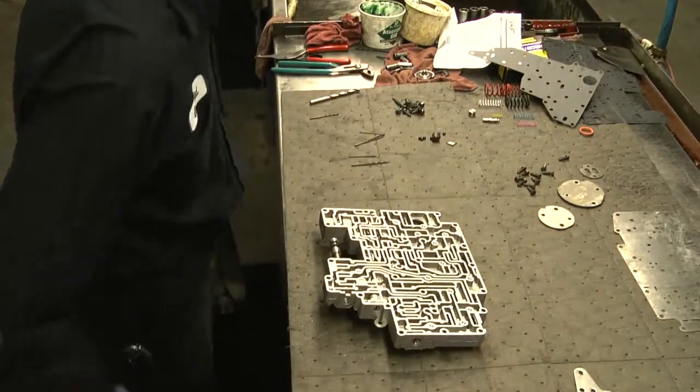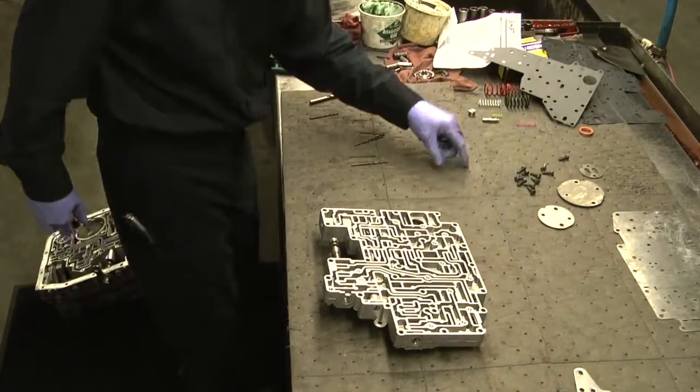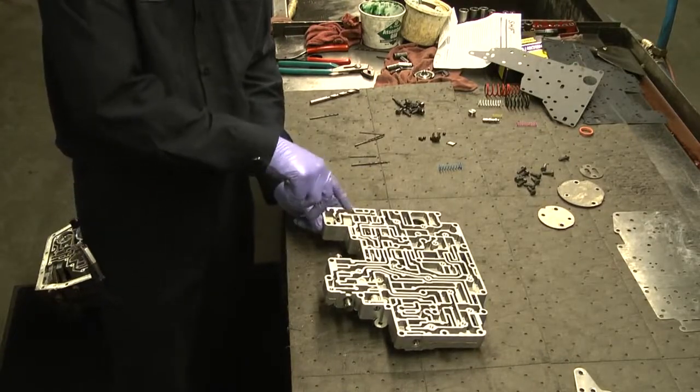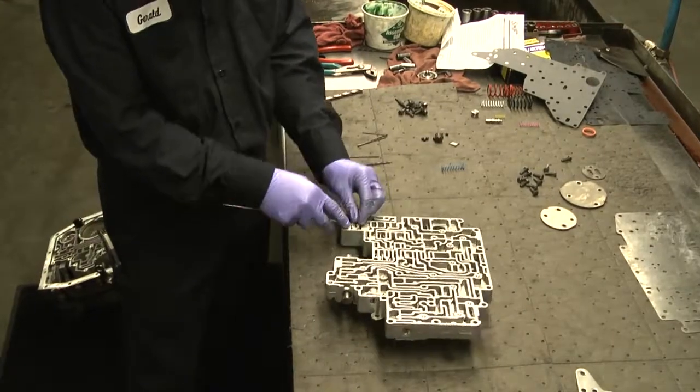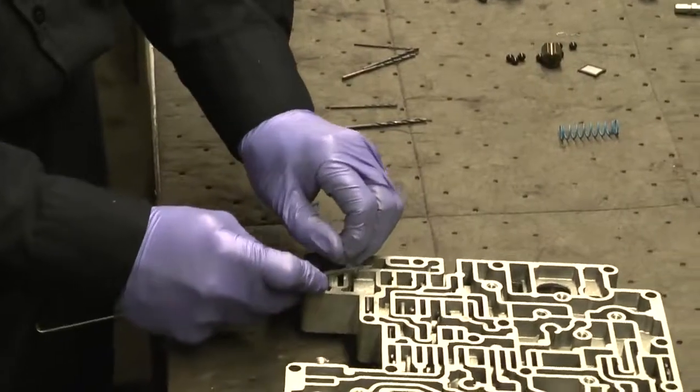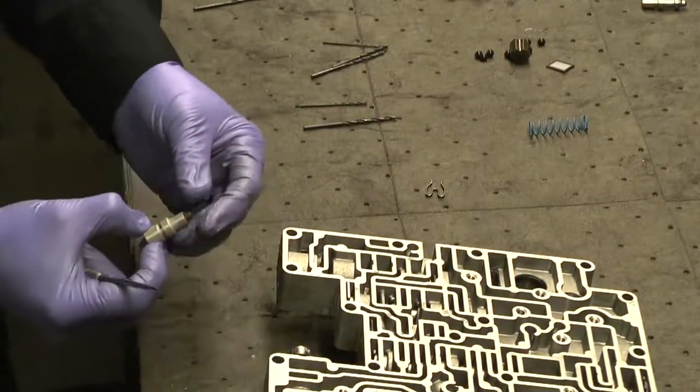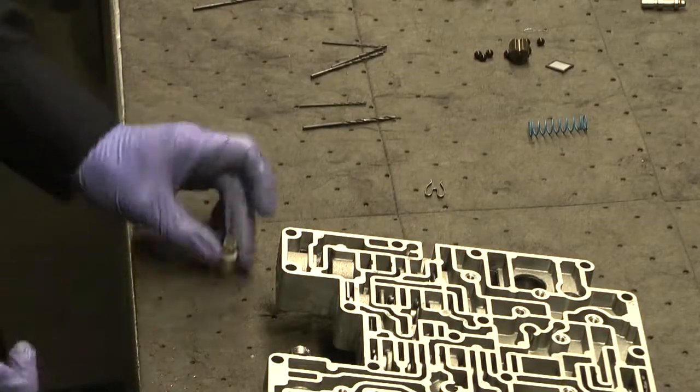So the first thing we're going to do here is the pressure regulator spring. I'm going to remove the clip, pull out the boost valve and sleeve, and we'll just put that aside.